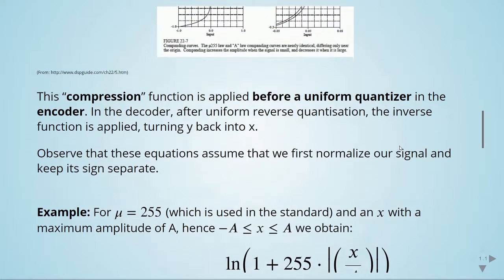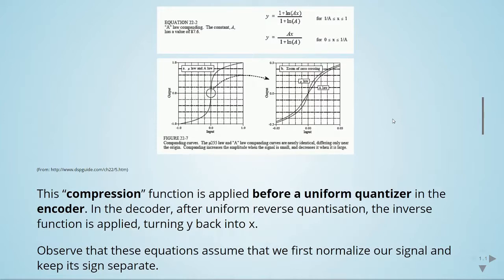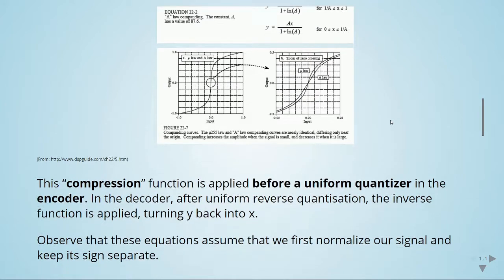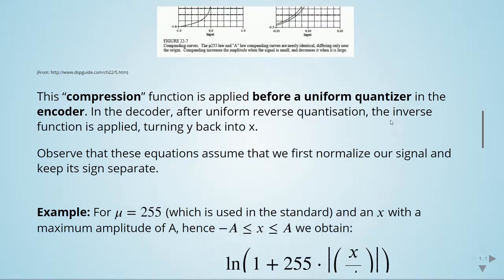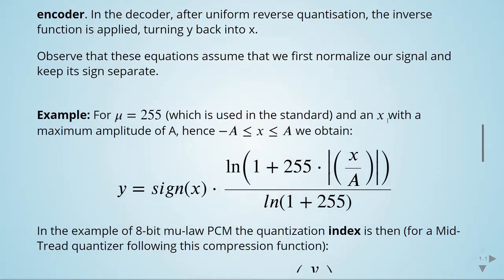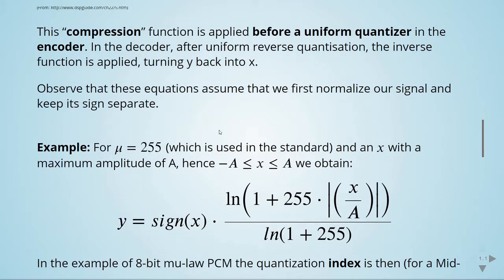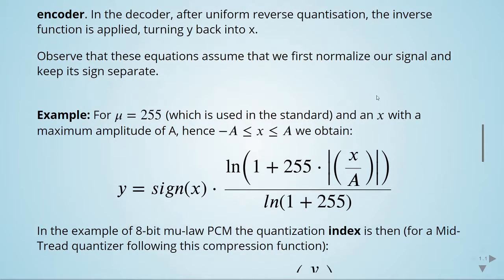Here is an example. We are going to use the mu law companding, and mu is equal to 255, which is used in the standard, and then we have a signal x with a maximum amplitude of A.